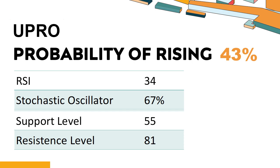UPRO has a 43% probability of rising stock price. When the probability of rising is lower than 50%, the probability of falling is relatively high; when higher than 50%, the probability of rising is relatively high. Combining multiple technical analysis indicators, UPRO has three bullish signals and four bearish signals.